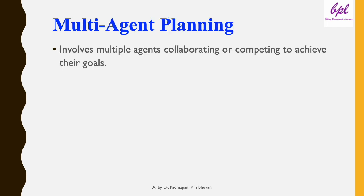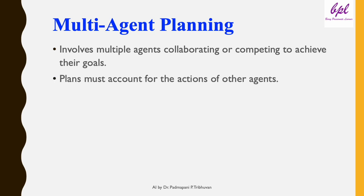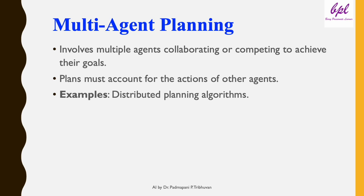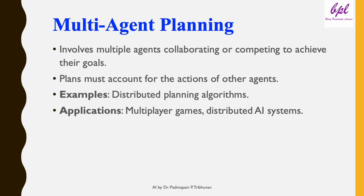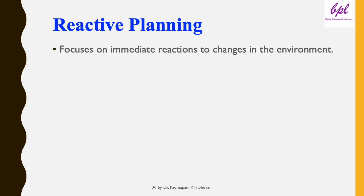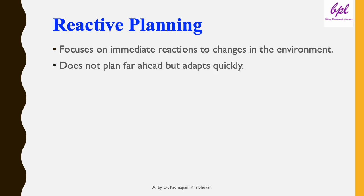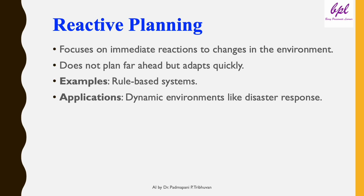Multi-agent planning involves multiple agents collaborating or competing to achieve their goals. Plans must account for the actions of other agents. Examples include distributed planning algorithms, with applications in multiplayer games and distributed AI systems. Reactive planning focuses on immediate reactions to changes in the environment — it does not plan far ahead but adapts quickly. Examples are rule-based systems, used in dynamic environments like disaster response.